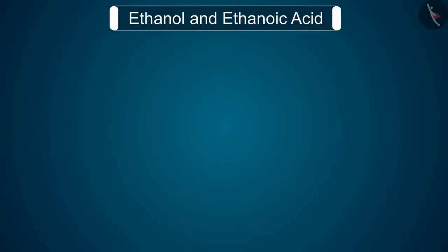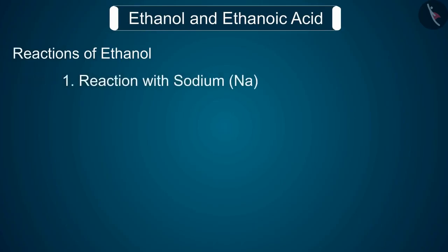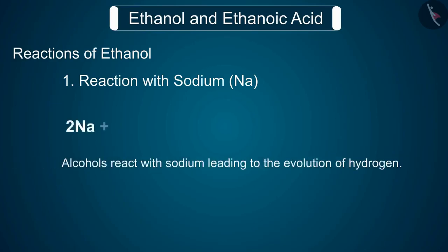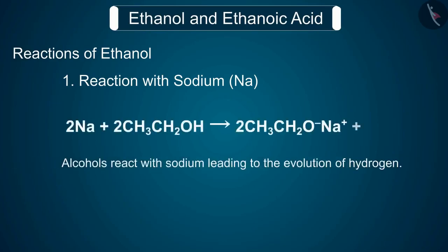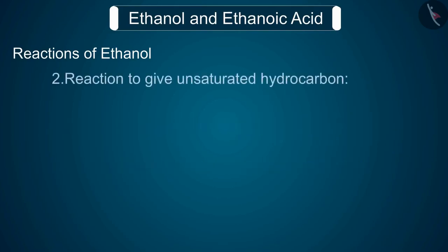We will now discuss the reactions of Ethanol. Reaction 1: Reaction with sodium (Na). Alcohols react with sodium, leading to the evolution of hydrogen. With ethanol, the other product is sodium ethoxide.